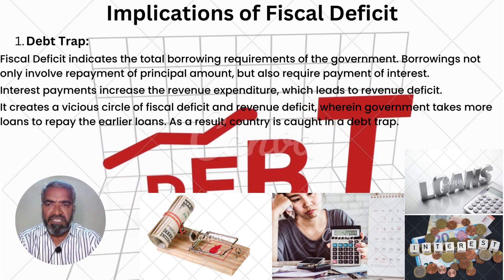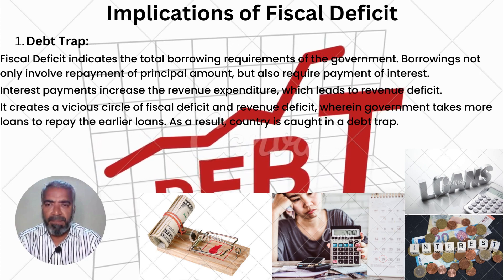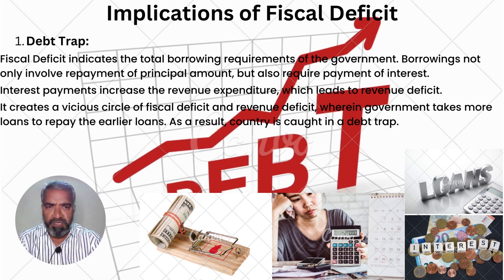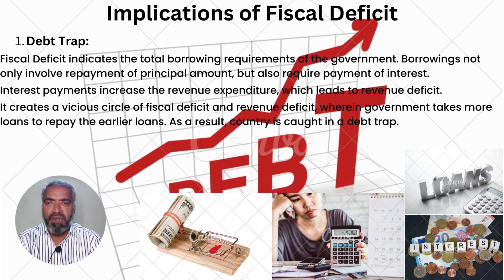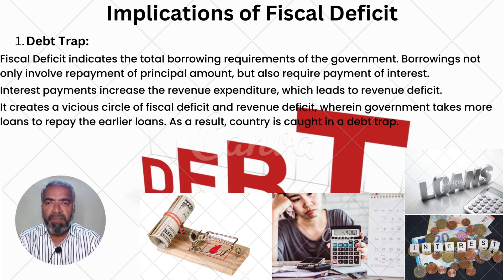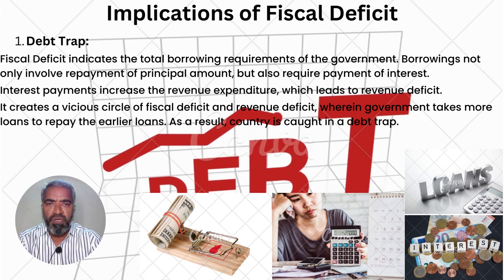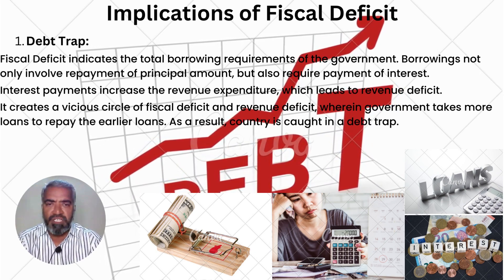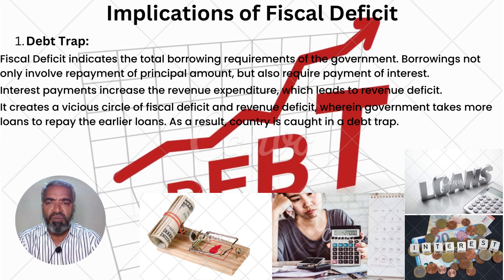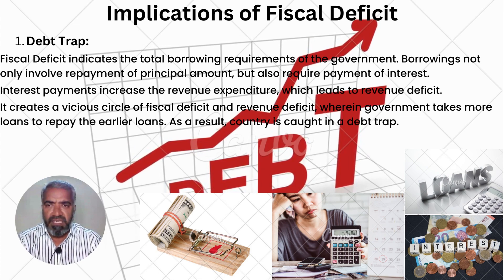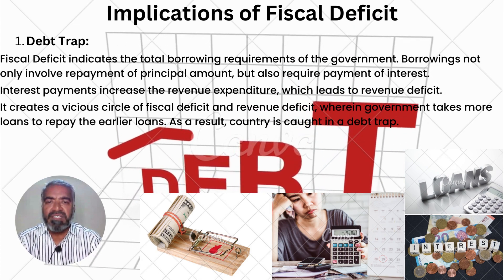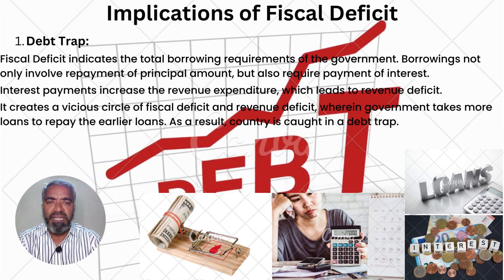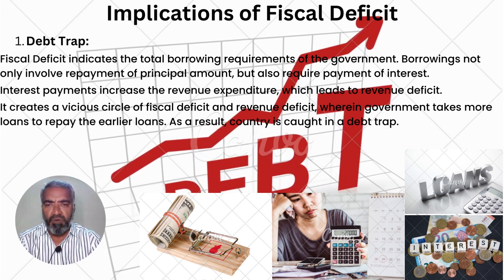Implications of Fiscal Deficit. 1. Debt Trap: Fiscal deficit indicates the total borrowing requirements of the government. Borrowings not only involve repayment of the principal amount but also require payment of interest. Interest payments increase revenue expenditure, which leads to revenue deficit. It creates a vicious cycle of fiscal deficit and revenue deficit, wherein the government takes more loans to repay earlier loans.